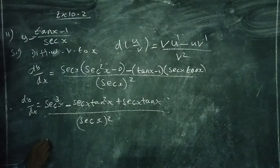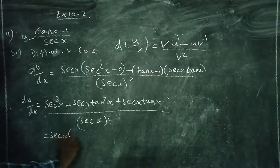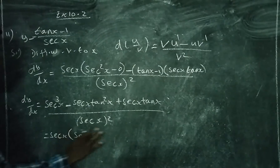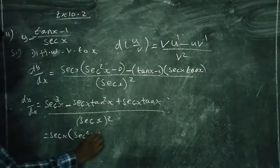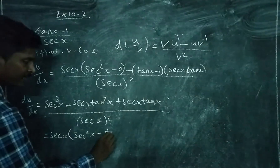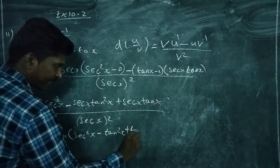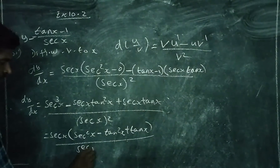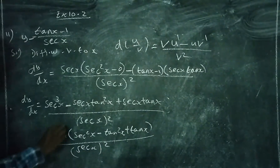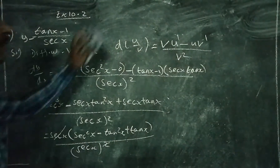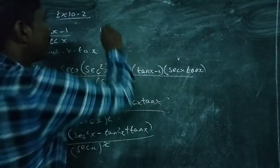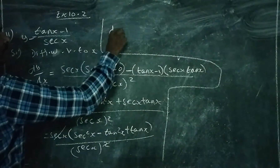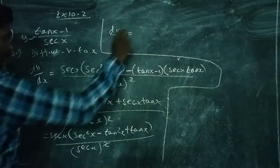From the numerator, take out sec x as a common factor. After factoring, we are left with sec x times the remaining terms, divided by sec x squared. The sec x cancels, so we have dy by dx equal to sec squared x minus tan squared x plus tan x, all divided by sec x.